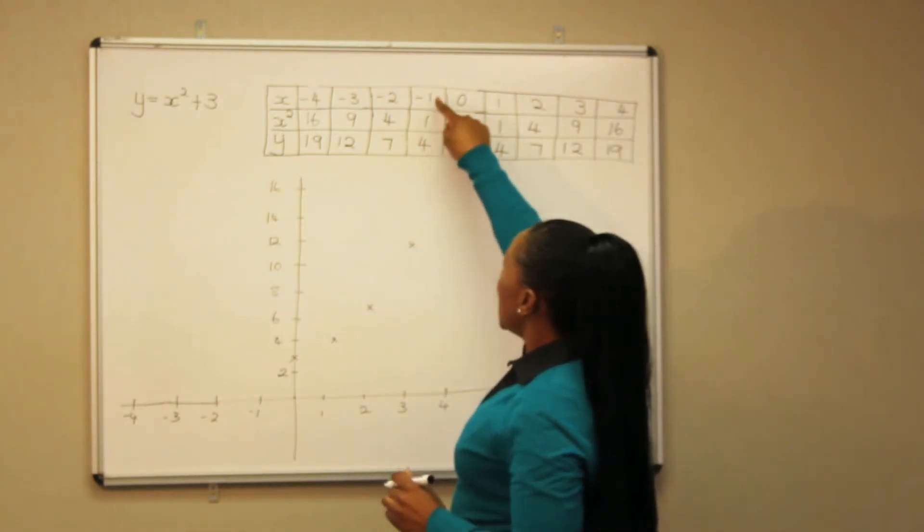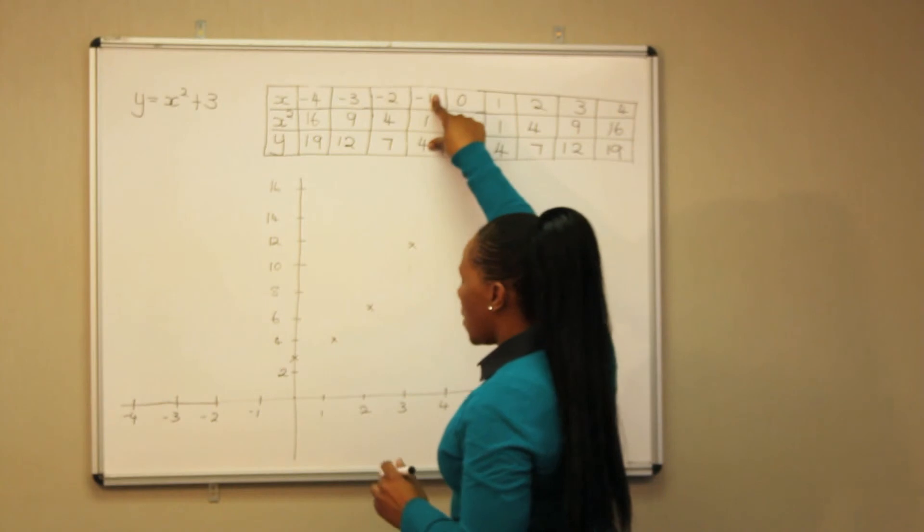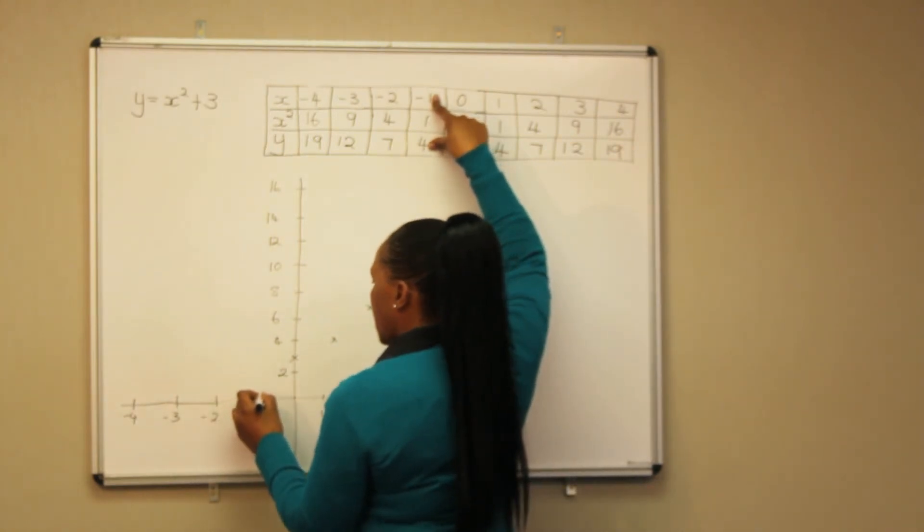Going on to the other side. When x is minus 1, y is 4.